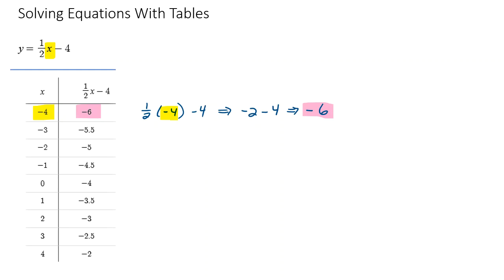So that's my y value when x is negative four and it's in the table right there. And similarly, all of these values were generated by plugging the corresponding value here in the x column into the equation and seeing what the y value is.